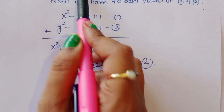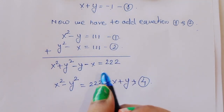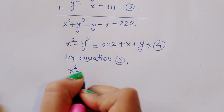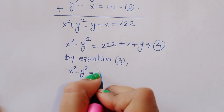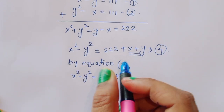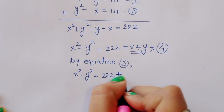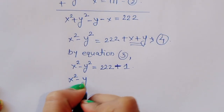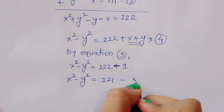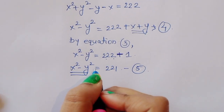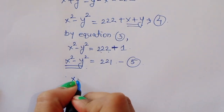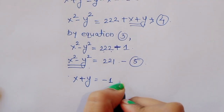We know the value of x plus y from equation 3: x plus y equals minus 1. Substituting into equation 4, x squared plus y squared equals 222 plus (minus 1), so x squared plus y squared equals 221. This is equation 5.